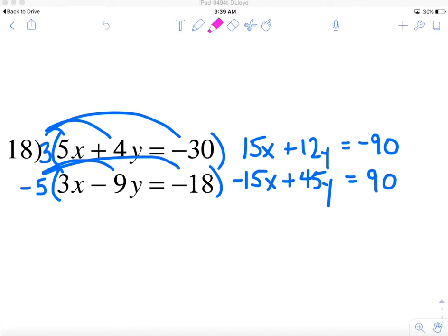What I'm after is an opposite pair in either the x or in the y column. Now we know we didn't work on the y's so this doesn't help us, but we have these opposite x's here and that's what I'm after.